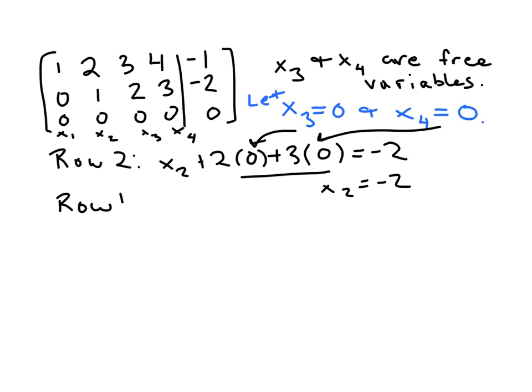Now looking at row 1, in the same way, that row says that x1 plus 2 times x2, which we now have a value of negative 2 for that, plus 3 times x3, which is 0, plus 4 times x4, which is 0, so I'm going to put just a plus 0 here, is equal to negative 1, according to this right here. So x1 minus 4 is equal to negative 1, which implies that x1 is equal to 3, if you add 4 to both sides here.